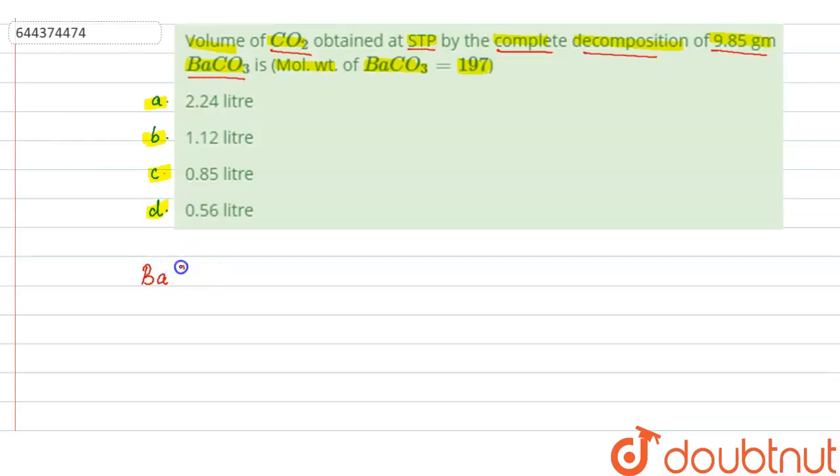When barium carbonate decomposes it forms barium oxide and carbon dioxide gas. From here you can see that one mole barium carbonate gives one mole of barium oxide and one mole of carbon dioxide gas.